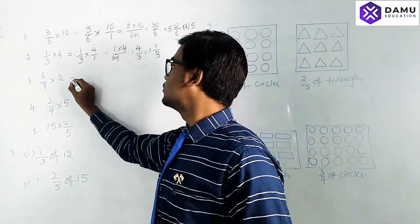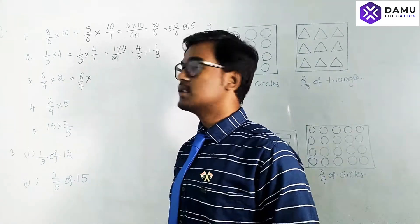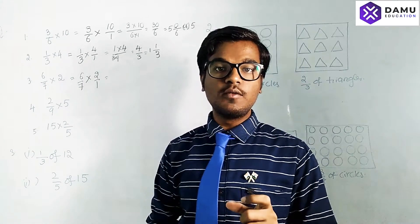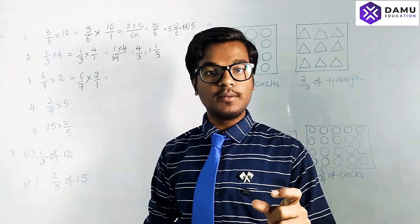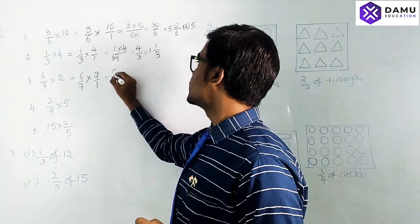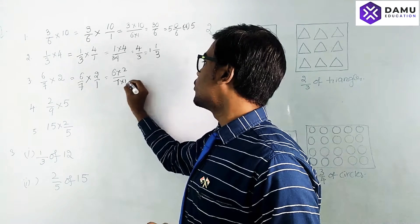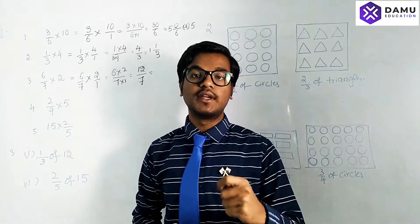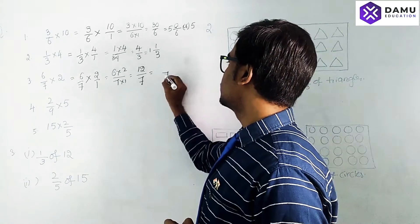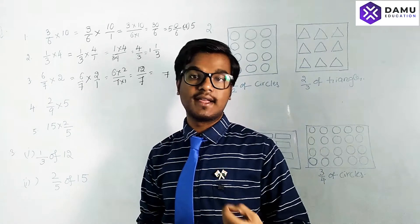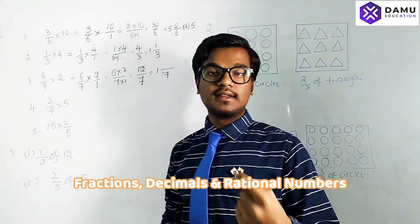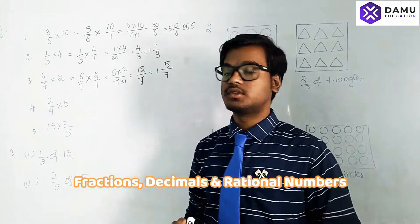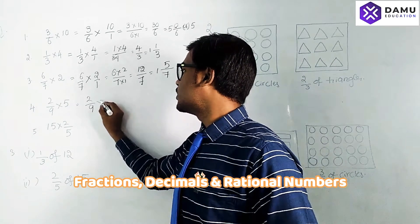Third question: 6/7 × 2. Write 2 as 2/1. The product of numerators is 6 × 2 = 12, and denominators 7 × 1 = 7, giving 12/7. The nearest multiple of 7 to 12 is 7 (7 × 1 = 7). So 12 − 7 = 5, meaning 12/7 = 1 and 5/7. This is how we express it as a mixed fraction.